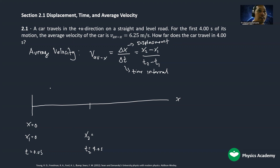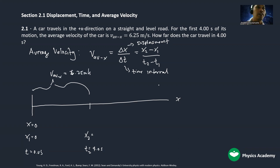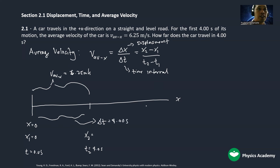The average velocity between this interval is equal to 6.25 meters per second. The problem asks how far does the car travel in four seconds. Given that the time interval Δt is 4.0 seconds, what we need to find is the displacement. We can use algebra to rearrange the formula.